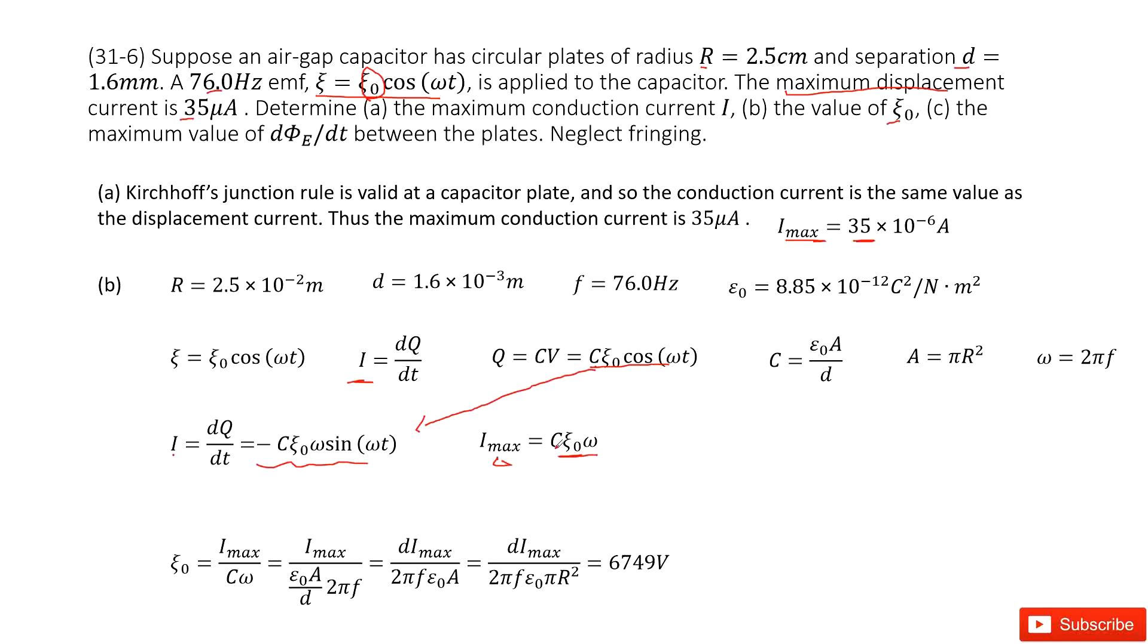C is the capacitance. We can calculate it by using epsilon naught A divided by d. A is pi r squared because this is a circle of plates. And the next one, omega, is angular frequency. We can write it as 2 pi f. So the only unknown quantity is epsilon naught. So we do this calculation together. We can see epsilon naught is I_max divided by C times omega.